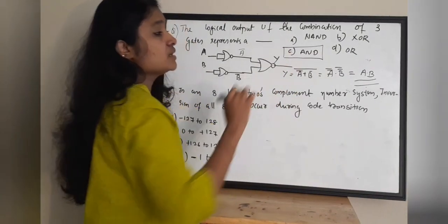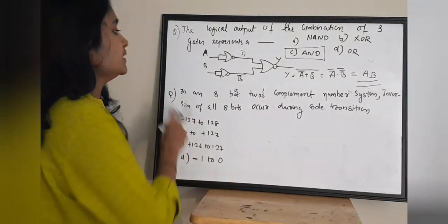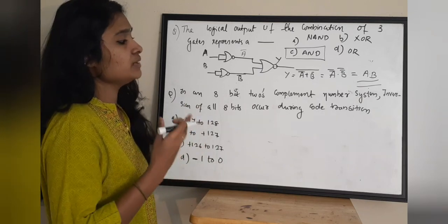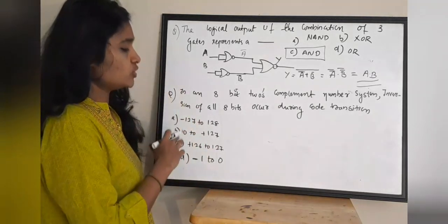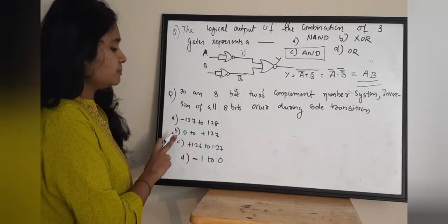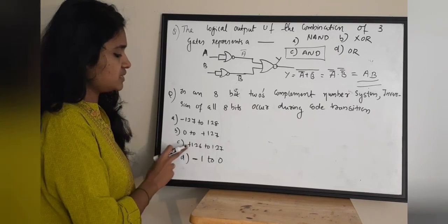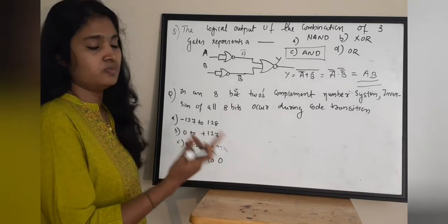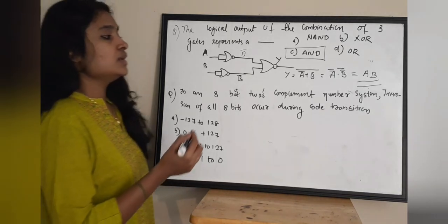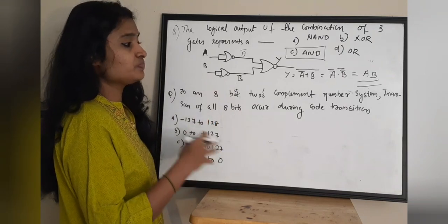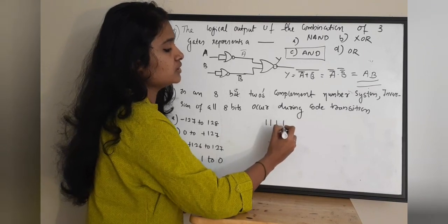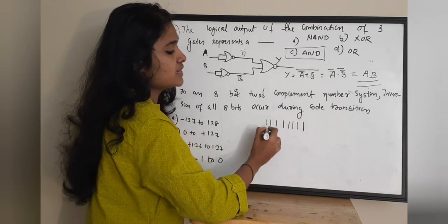Next question: in an 8-bit 2's complement number system, inversion of all 8 bits occurs during a code transition from what number to what number? Options are: A) minus 127 to 128, B) 0 to plus 127, C) plus 126 to 127, D) minus 1 to 0. For all 8 bits to invert, we consider the transition from 11111111 to 00000000.